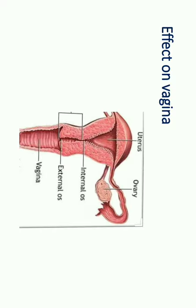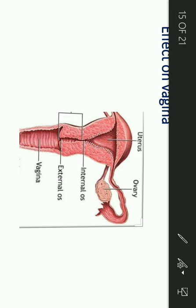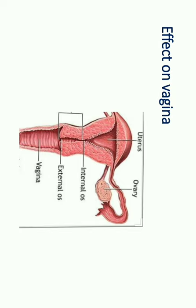Regarding the effect on the vagina, estrogen increases vaginal epithelial proliferation and changes its cells from cuboidal to more stratified cells. Estrogen makes the vagina more acidic in nature, changing it from alkaline to acidic, and this plays an important role in protection from vaginal infection.